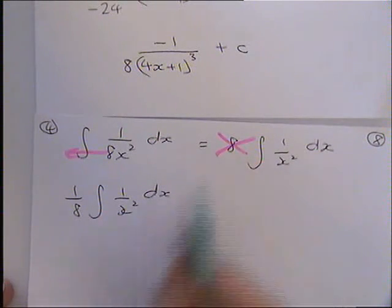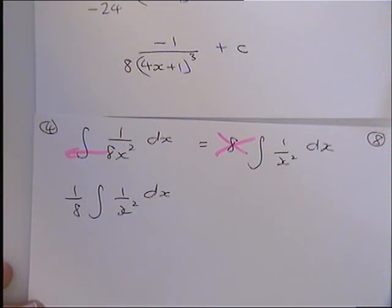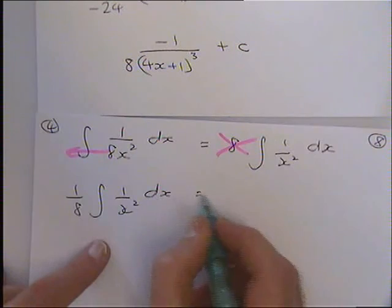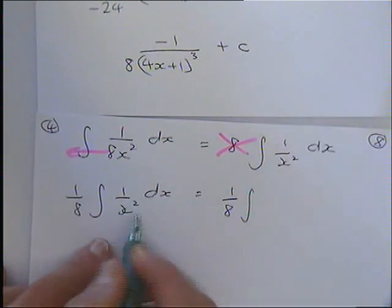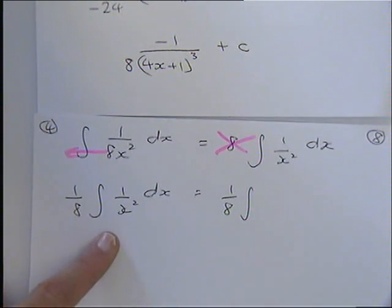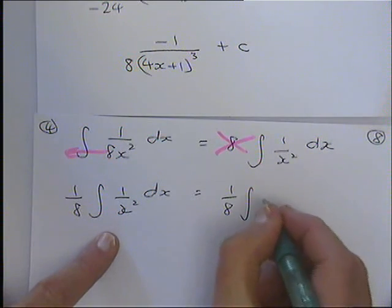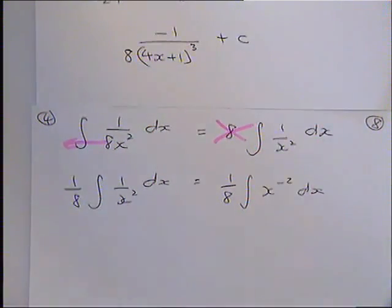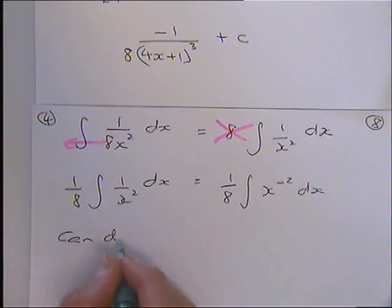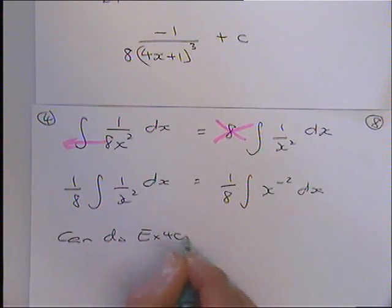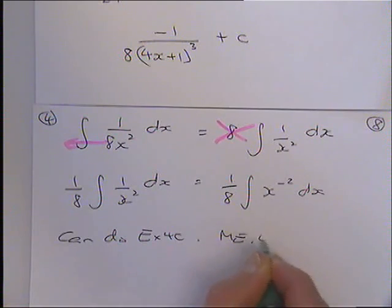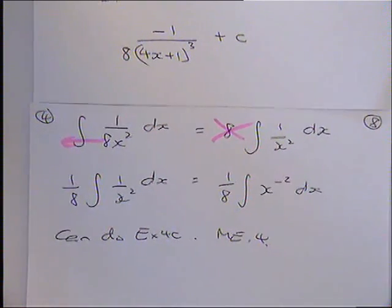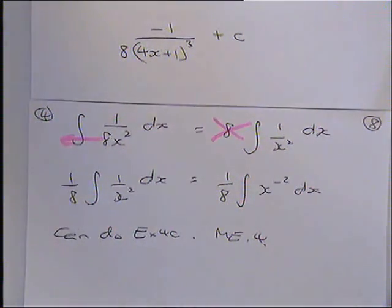Then you keep the 8th there. How will you rewrite 1 over x squared? X to the minus 2. And you can go on from there. Right. Now, I just want to make a note, you see, that you can now do exercise 4C and you can now also do miscellaneous exercise 4. Actually, you can do the whole chapter. Yes.